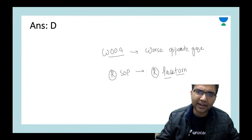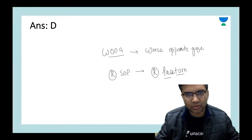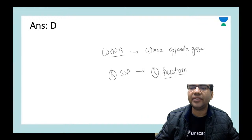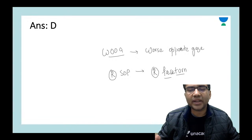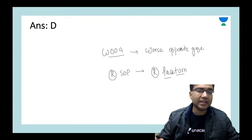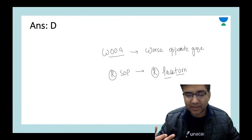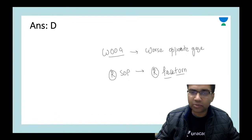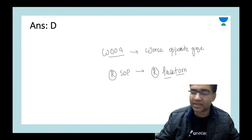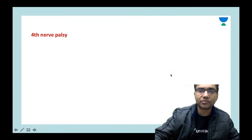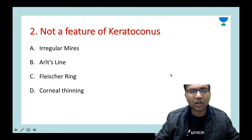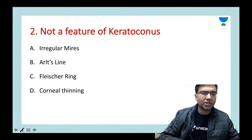This is how you can determine the head tilt or face turn in superior oblique palsy. Do not use these mnemonics whenever you get an inferior oblique or superior rectus palsy — for that you can do a Park's three step test. We have already made a video on that; let me know in the comments if you want it.